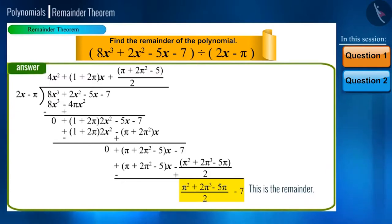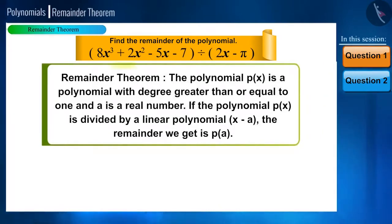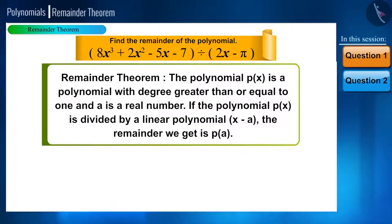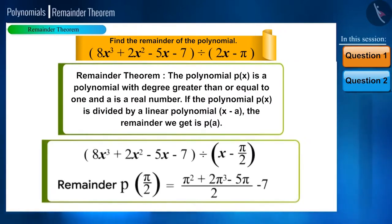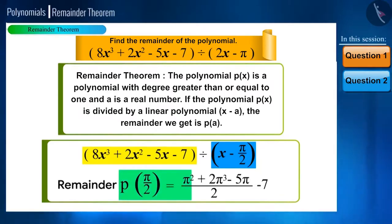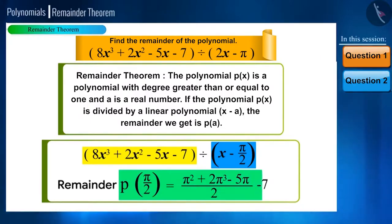Now let's see the solution using the remainder theorem. Let's assume p(x) is a polynomial with degree greater than or equal to 1, and a is a real number. If the polynomial p(x) is divided by a linear polynomial x minus a, the remainder we get is p(a). Comparing this with our example, here we are dividing p(x) by the linear polynomial x minus π/2, and we got the remainder p(π/2) as π squared plus 2π cubed minus 5π divided by 2, minus 7.